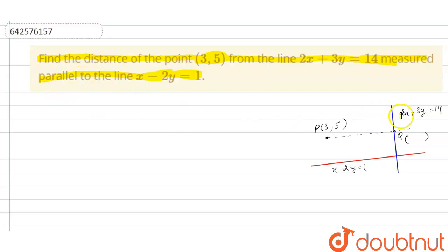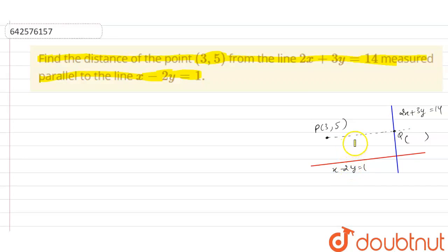We have a diagram in which two lines intersect at a point. One line has equation x - 2y = 1, and the other line has equation 2x + 3y = 14. We also have a line parallel to x - 2y = 1, and we need to find the coordinate of intersection of this parallel line with the line 2x + 3y = 14 — that point is Q.